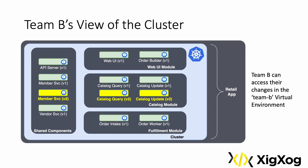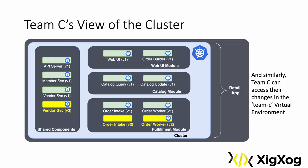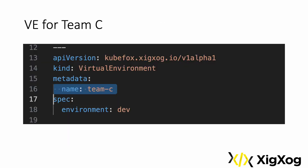Just as with Team A, Team B can interact with the application as if they were working in a private sandbox. Behind the scenes, KubeFox is routing traffic for Team B as if the only changes were Team B's. The VE and deploying to that VE are all that are required to partition traffic for Team B as if their changes were the only changes that had been made. And this pattern is identical for Team C, with the same simple YAML.